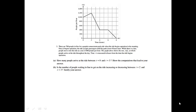Question 3. There are 700 people in line for a popular amusement park ride when the ride begins operating in the morning. Once it begins operation, the ride accepts passengers until the park closes 8 hours later. While there is a line, people move on to the ride at a rate of 800 people per hour. The graph above shows the rate R at which people arrive at the ride throughout the day. Time t is measured in hours from the time the ride begins operation. Part A: How many people arrive at the ride between t equals 0 and t equals 3? Show the computations that lead to your answer.